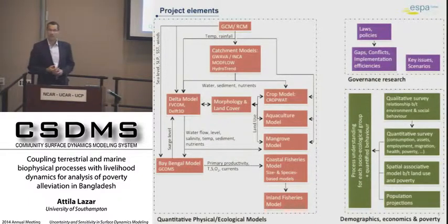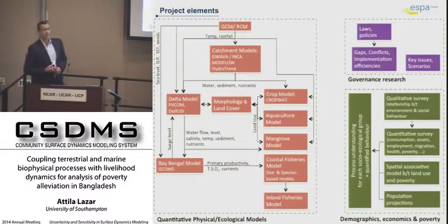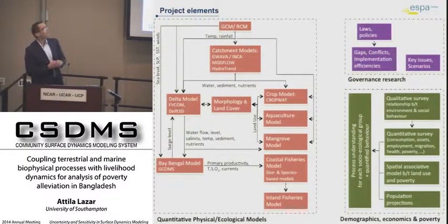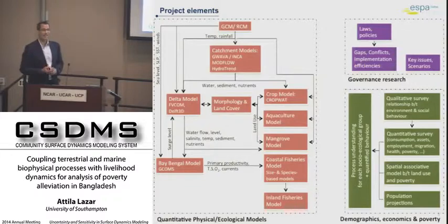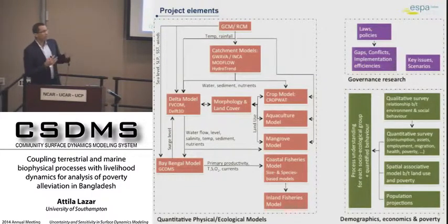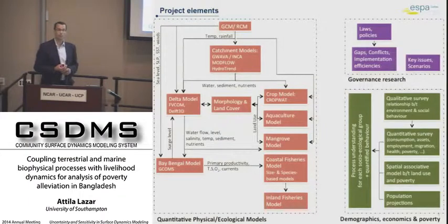The third pillar is the biophysical modeling — practically the entire system, starting from climate model projections, hydrological sediment transport models, modeling the Bay of Bengal, modeling the delta plane with FECOM and DELFT3D. These feed into the morphodynamic analysis and the land cover model. All these together affect the productivity models that we are applying in this project.